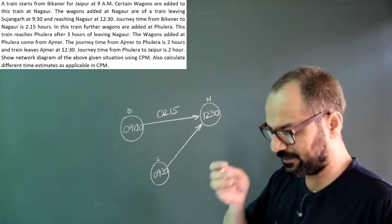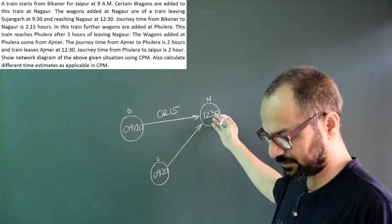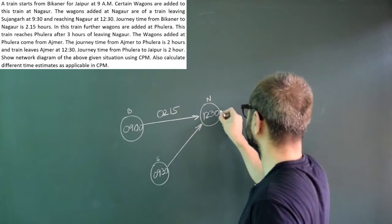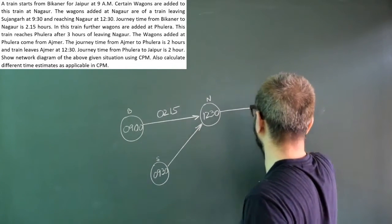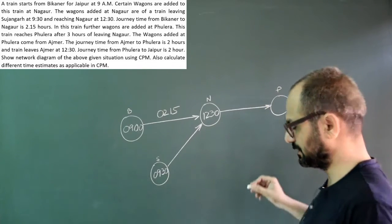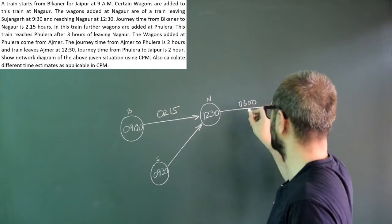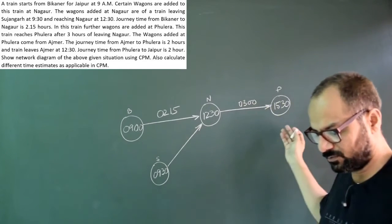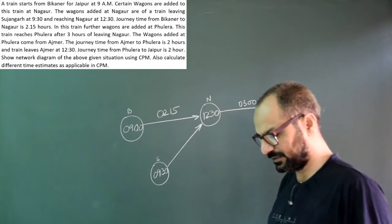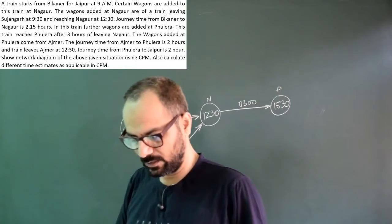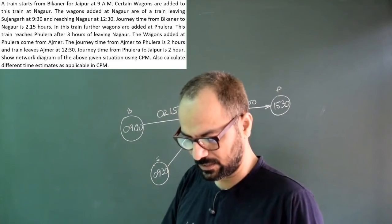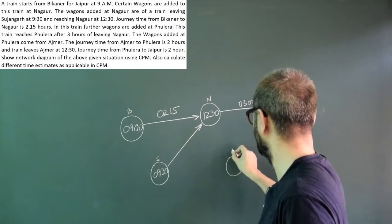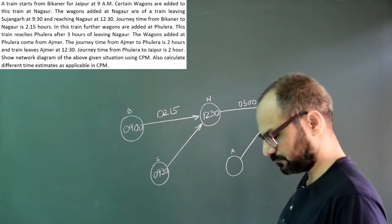Journey time from Bikaner to Nagore is 2 hours and 15 minutes. The train left at 9, it takes 2 hours 15 minutes, it should be here by 11:15, but we are talking of 12:30. This train probably travelled slowly, departed late, or is waiting. These two trains will combine at 12:30. Further wagons are added at Phulera. The train reaches Phulera after 3 hours, at 15:30, which is 3:30 PM. The wagons added at Phulera come from Ajmer.